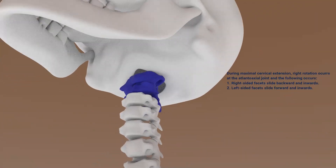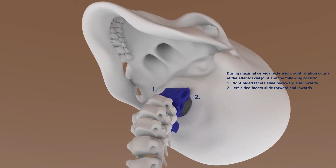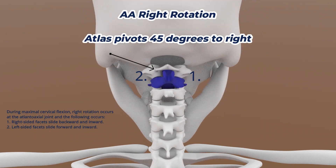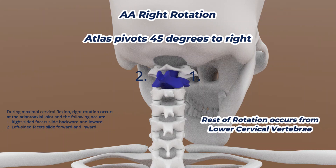For atlanto-axial rotation to the right during right neck rotation, the left-sided inferior facets of the atlas slide forward and inward, while the right-sided inferior facets slide backward and inward. The atlas pivots 45 degrees to the right and is limited from further rotation by the alar ligaments. Due to this, the rest of the rotation to the right occurs at the lower cervical segments.